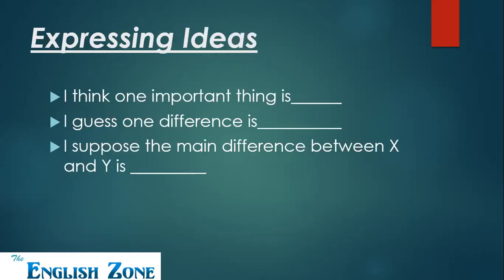Suppose we want to express our ideas — then how do we phrase it? We can say: 'I think one important thing is...', 'There is one important thing and that is...', 'I guess one difference is...', 'I suppose the main difference between X and Y is...' Whenever we want to express our ideas using these phrases, it seems very natural. Using 'I think,' 'I guess,' 'I suppose' creates a positive impact on the examiner.